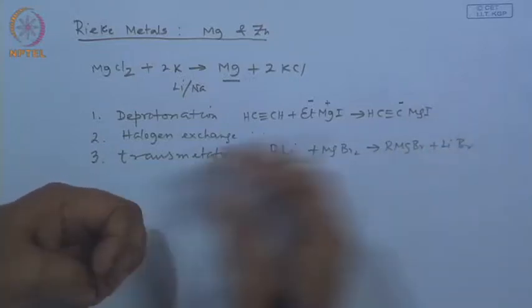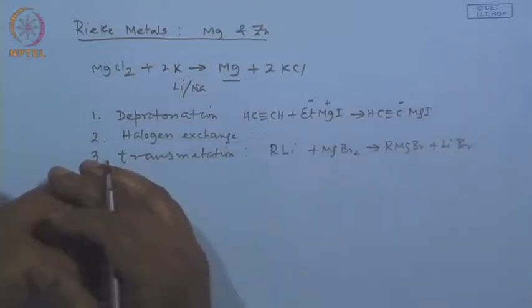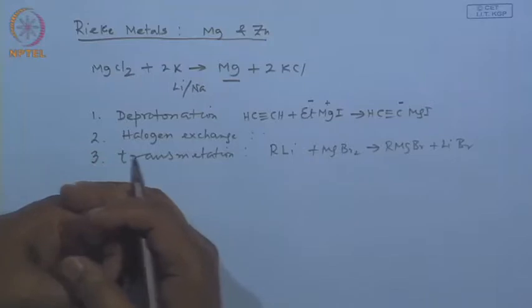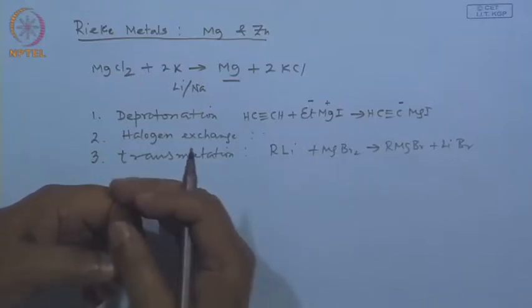If you want to make a zinc compound, you can take organolithium or organomagnesium and add the zinc salt. Transmetallation also normally goes in favor of the heavier, less electronegative, more electropositive atoms.